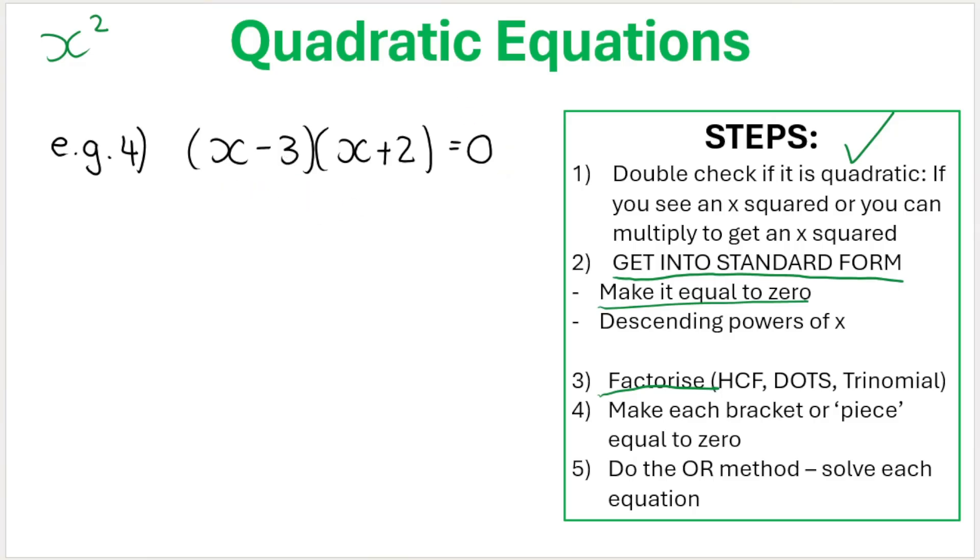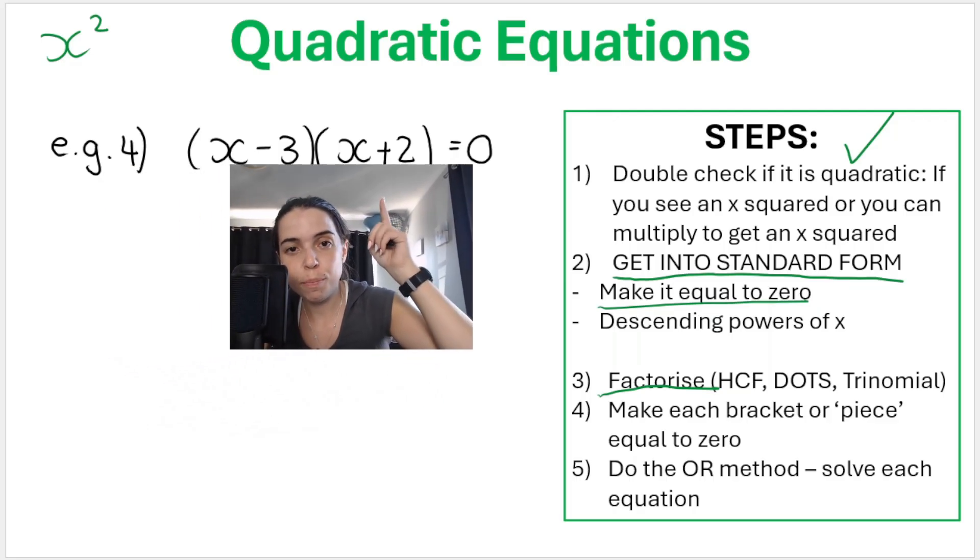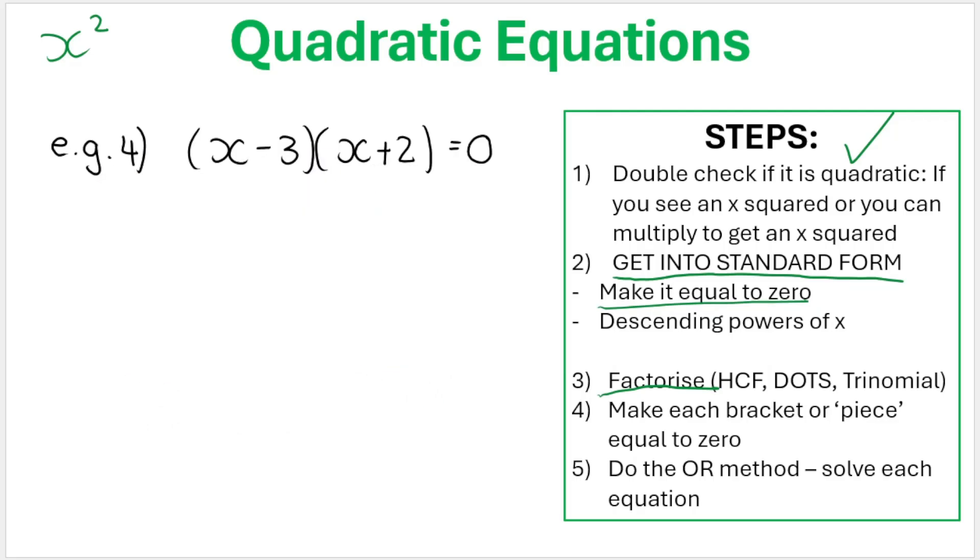So you must actually say, yes, this is so easy because all that I need to do now is I need to take each piece or each bracket and make it equal to zero. So you're going to go x minus 3 equals zero, do the OR method, or x plus 2 equals zero. Opposite of minus 3 plus 3, opposite of plus 2 minus 2. That's it. That's as easy as it gets. So basically in this example, they've already done steps 1 to 3 for you. All you need to do is step 4 and 5.